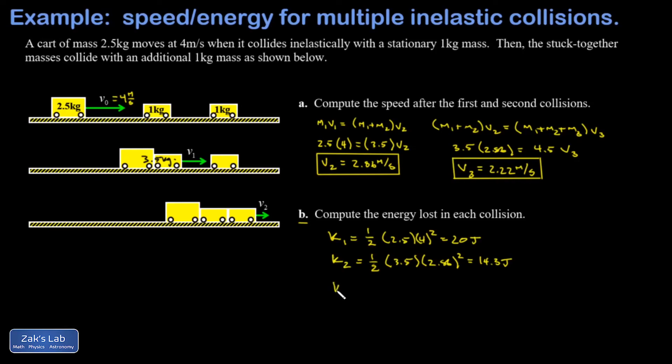And then in the final state, I'll call that K3. I had one half, 4.5 kilograms moving at 2.22 meters per second, got to square that. And when I run the numbers on this I get 11.1 joules.